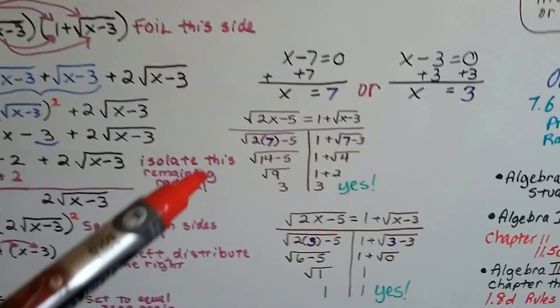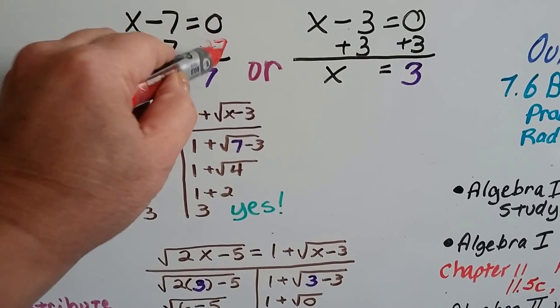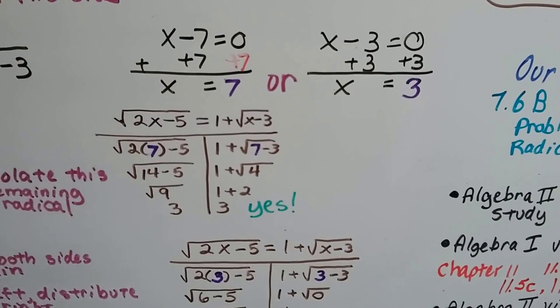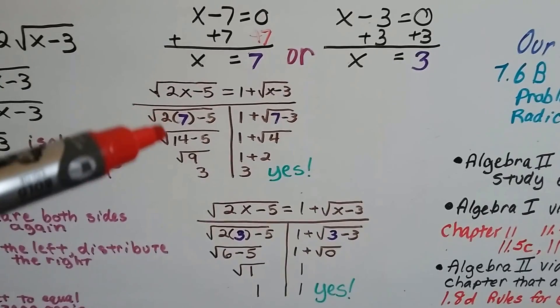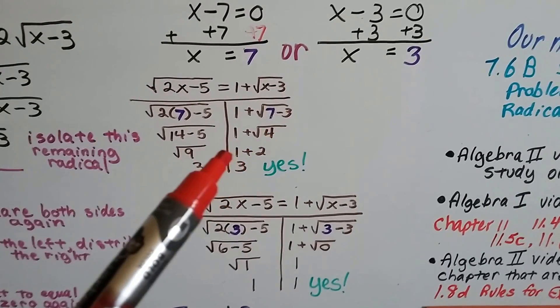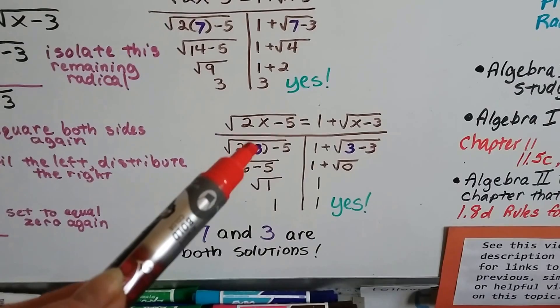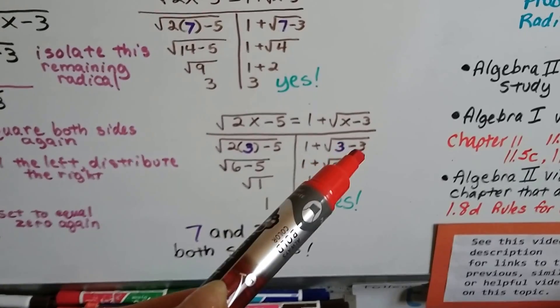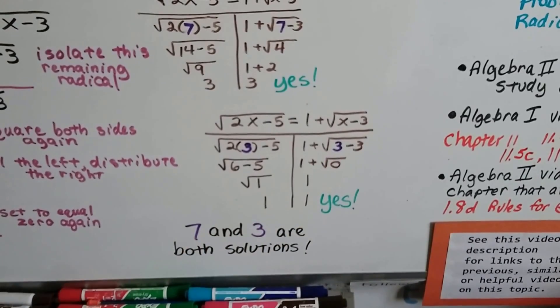Now we're going to use that principle of zero products again. We've got them set to equal 0, so we're going to add 7 and add 7. So now we're going to have an x equals 7 on this side, and then we're going to have an x equals 3 on this side. Now we can plug in a 7 and a 3 to check them. We plug in the 7 to our original equation, and we find out that 14 minus 5 is a 9. So we have square root of 9, which is a 3, and 1 plus the square root of 4 is a 1 plus a 2. That's a 3. That's a yes. So 7 is an answer. We plug in the 3, and we get 2 times 3 minus 5. That's a 6 minus 5. That's a square root of 1. 1 times 1 is 1, so our answer is 1 here. We get a 3 minus 3, and that's a square root of 0. So that's a 0, and then we have 1 on this side. So yeah, 7 and 3 are both solutions.